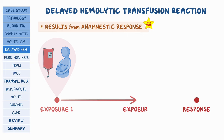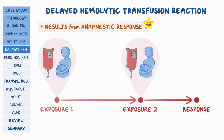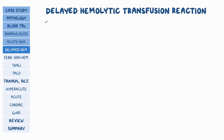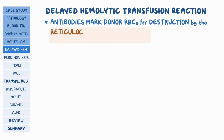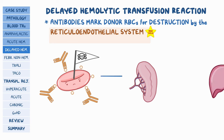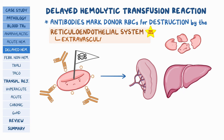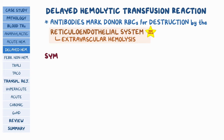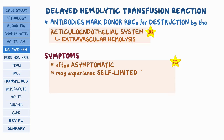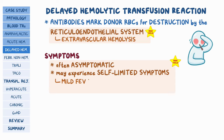On a subsequent exposure — like a later blood transfusion or second pregnancy — these antibodies trigger an intense immune reaction. In delayed hemolytic transfusion reactions, antibodies don't directly destroy donor red blood cells but mark them for destruction by the reticuloendothelial system, meaning the spleen and liver, resulting in extravascular hemolysis. Individuals are often asymptomatic, while some may experience self-limited symptoms such as mild fever and jaundice.